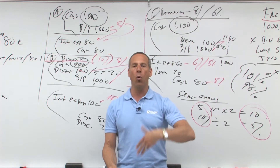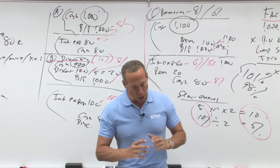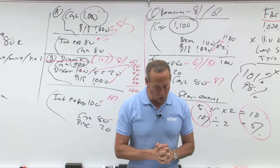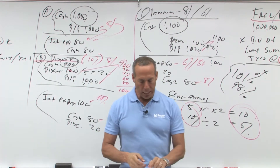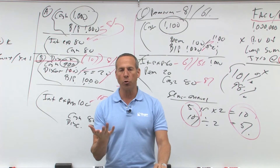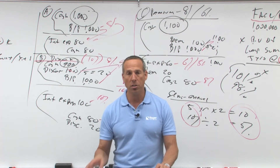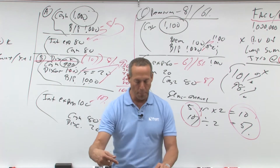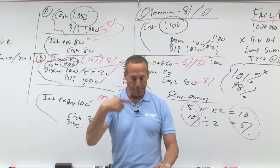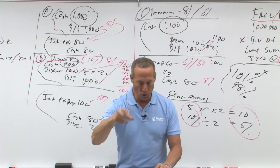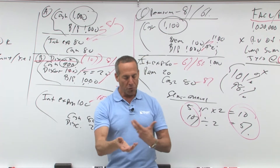We also have future values — this is how much an amount will grow into or accumulate in the future. If you look in your notes, future value of a dollar: if I put a dollar in the bank at 10%, in one year it'll be $1.10. In two years it'll earn interest on interest — compounding interest — that'll be $1.21. If you look at 10%, two years: 1.210. So that would be future value.